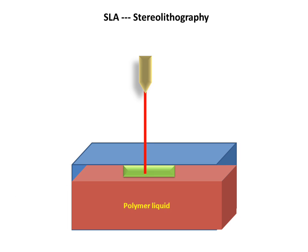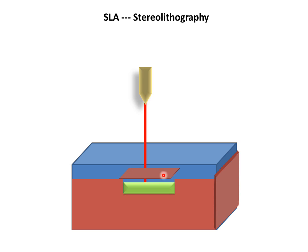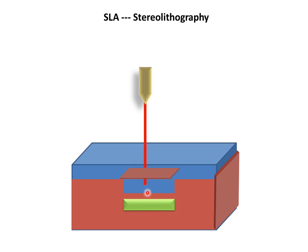The laser will solidify the layer of the polymer liquid. The platform will go down, carrying the first layer. Then again, the platform will go down, the polymer liquid will come up, and the laser will work on the polymer liquid and solidify it — creating the second layer.